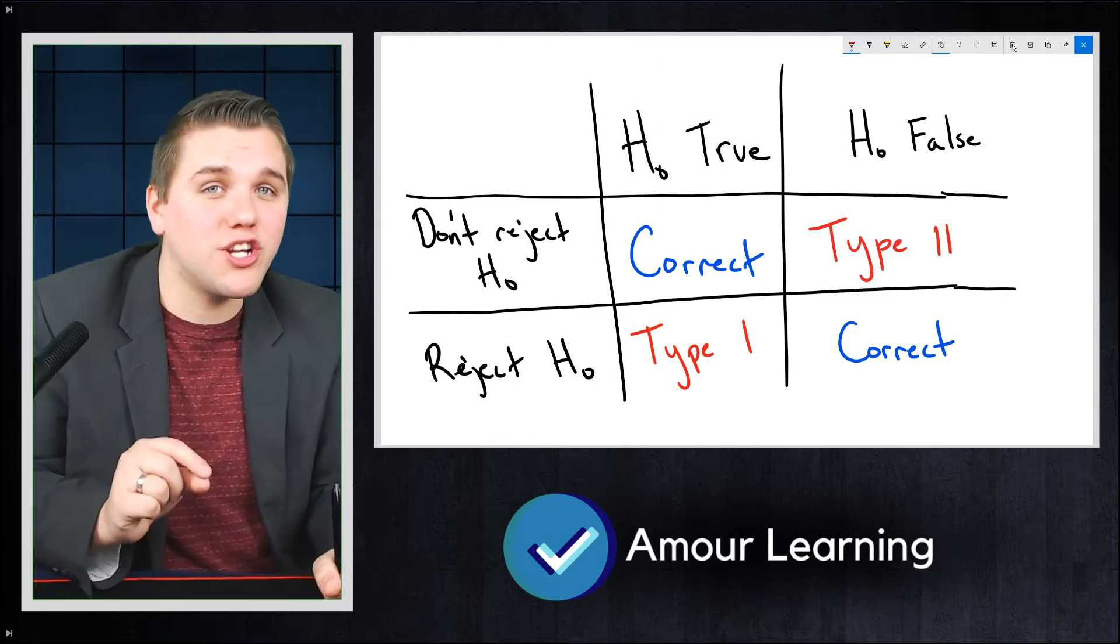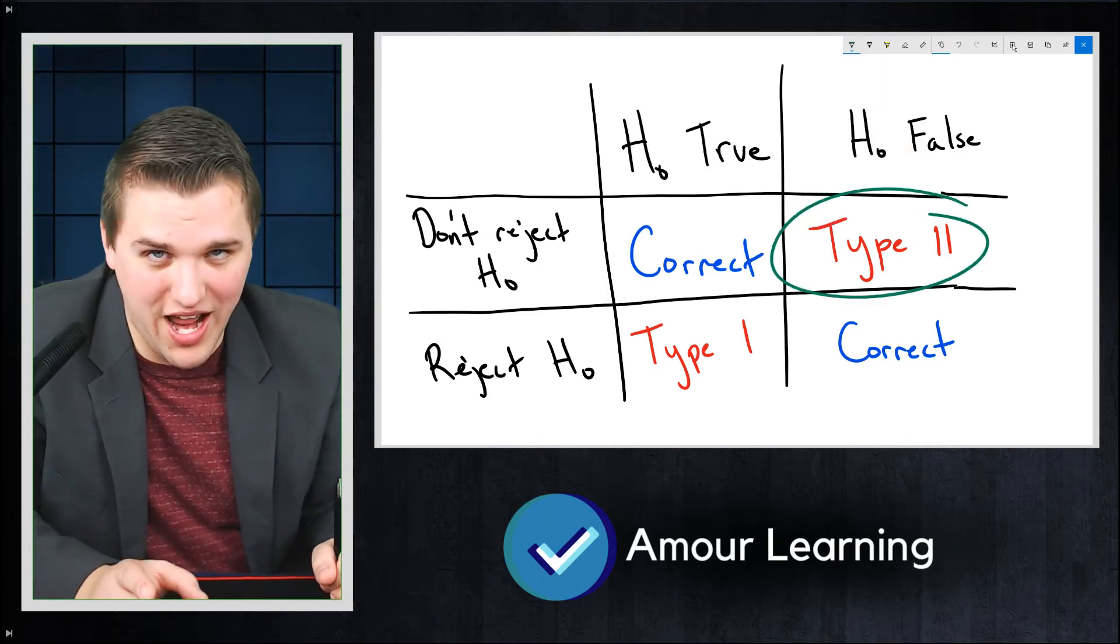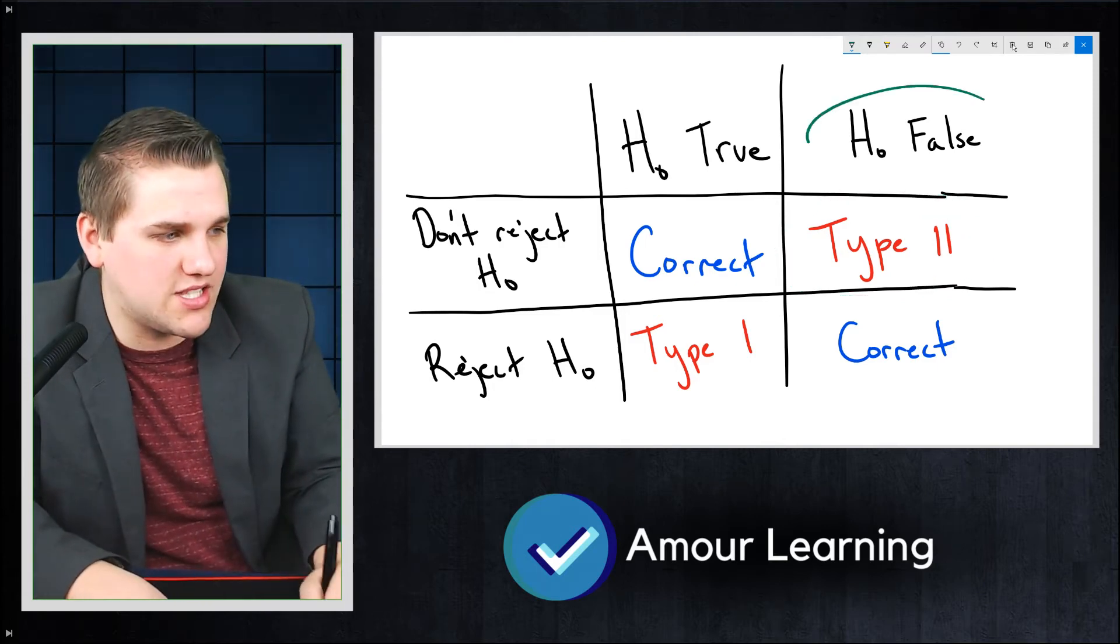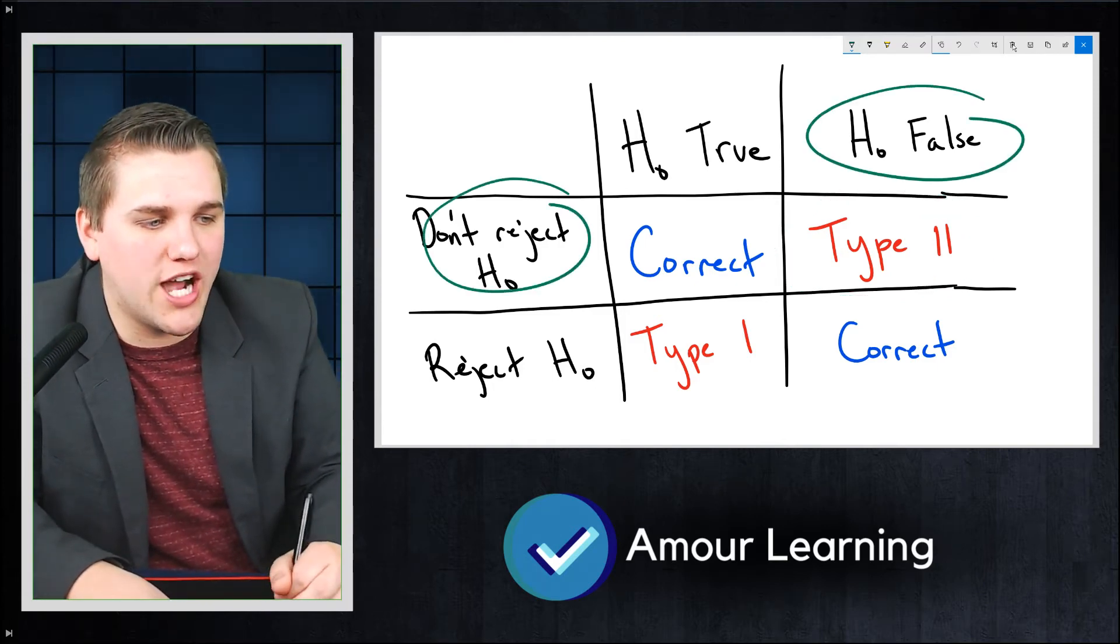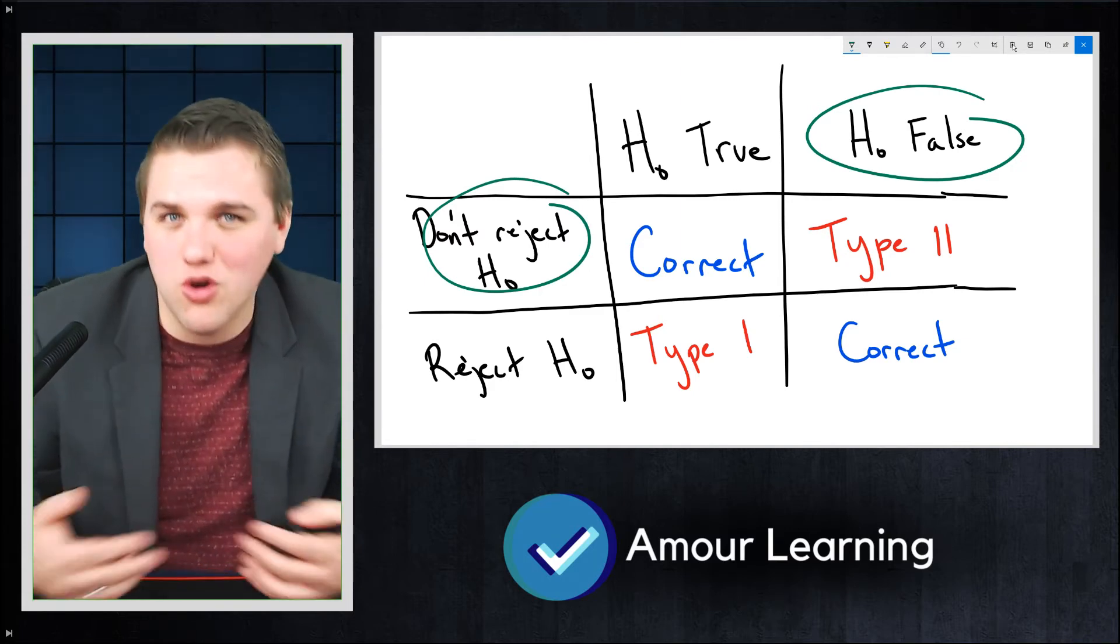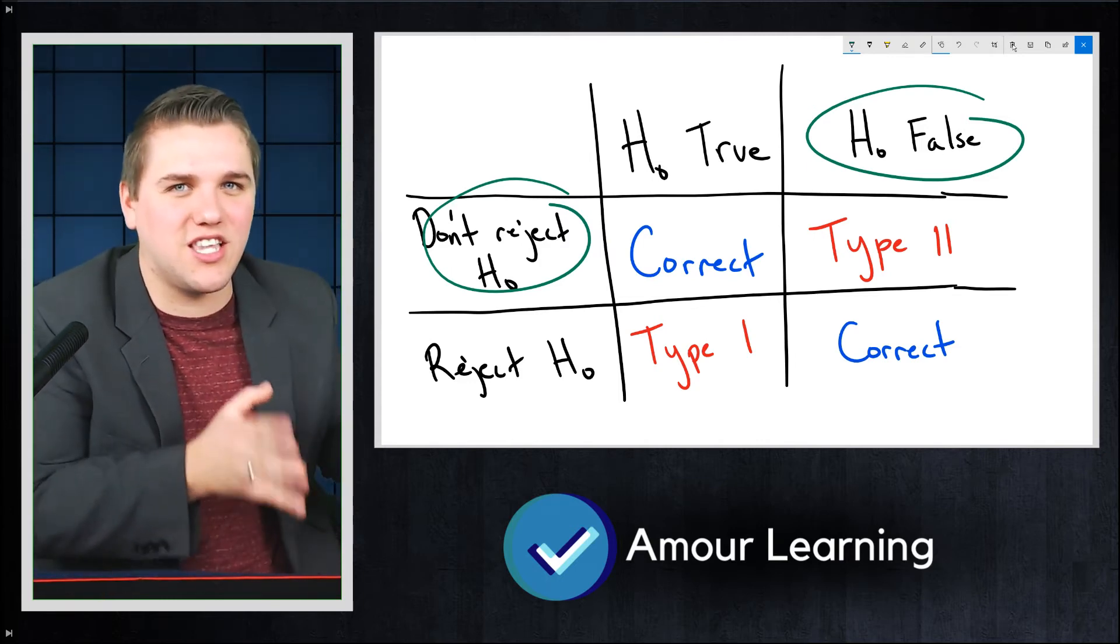Now, personally, I like type 2 errors a lot better than type 1 errors. And let me explain why. Typically, when the null hypothesis is false, but you don't reject it, that just means your experiment just wasn't good enough. Maybe you can make your experiment better. And that problem can be fixed really easily later down the road.